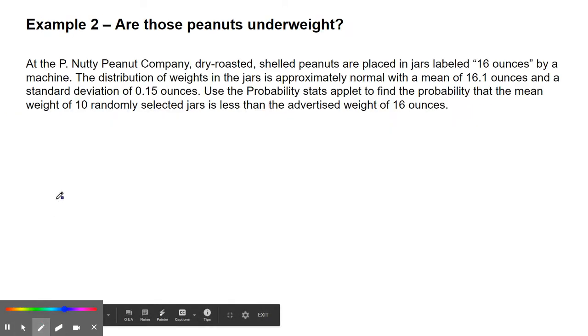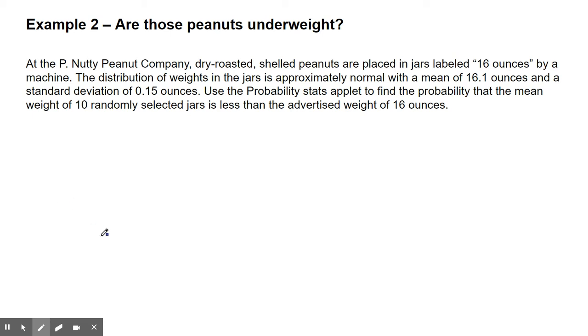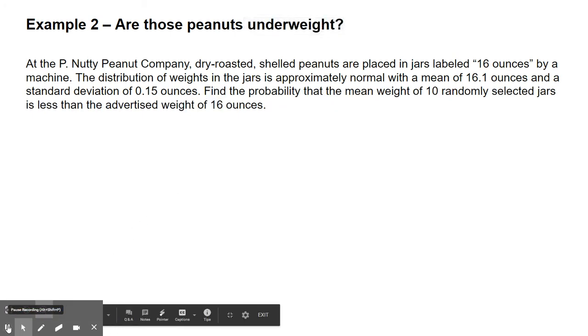Let's do a problem together. Example 2: Are those peanuts underweight? At the P. Nutty Peanut Company, dry-roasted shelled peanuts are placed in jars labeled 16 ounces by a machine. The distribution of weights in the jars is approximately normal with a mean of 16.1 ounces and a standard deviation of 0.15 ounces. Use the probability stats applet to find the probability that the mean weight of 10 randomly selected jars is less than the advertised weight of 16 ounces. This is like real life, right? A company advertises 16 ounces per jar of peanuts. Are you really getting what you asked for? I think of this a lot with potato chips.